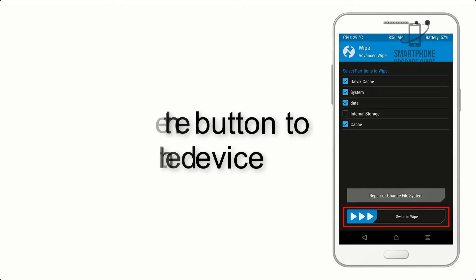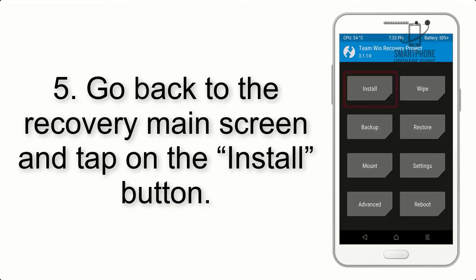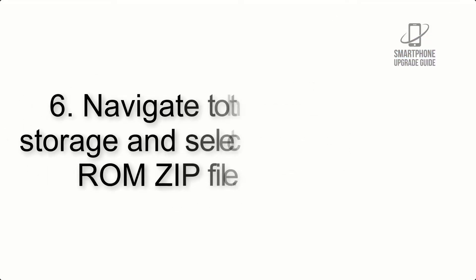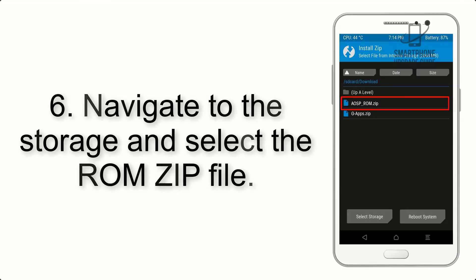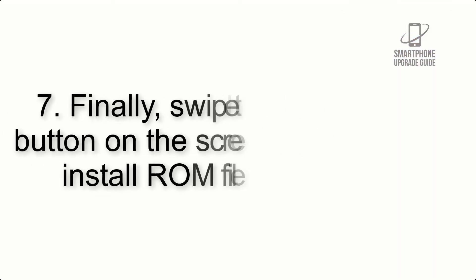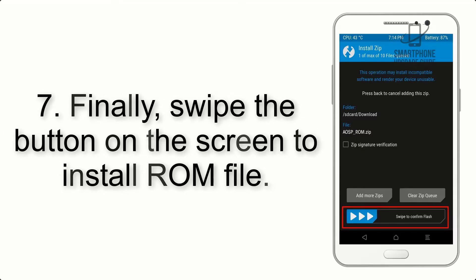Step 4: Swipe the button to wipe the device. Step 5: Go back to the recovery main screen and tap on the Install button. Step 6: Navigate to the storage and select the ROM zip file.